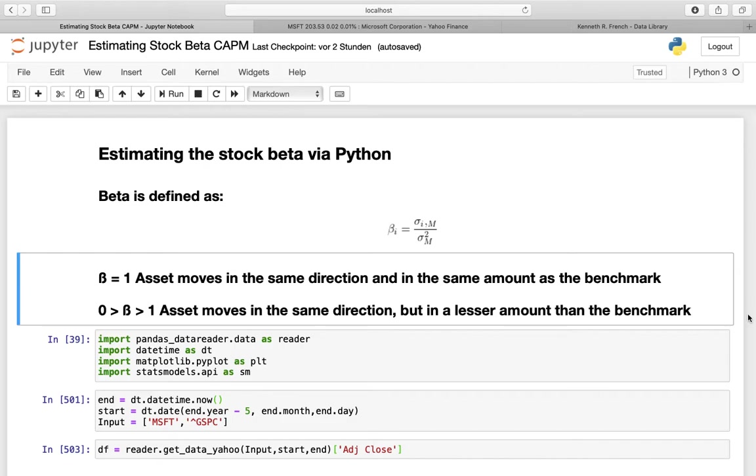Let's take a look at the modules we are needing. If you don't know what these modules are about, please click the video in the right corner. What's new is statsmodel.api SM. That is our module which we are needing for the linear regression. I already set up the start and end date here. And I'm going back 5 years here as we want to calculate the 5-year beta on a monthly base.